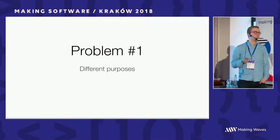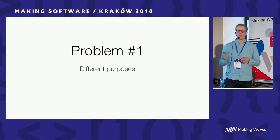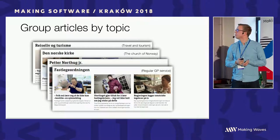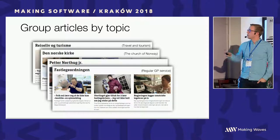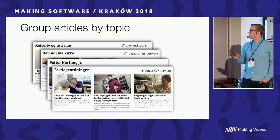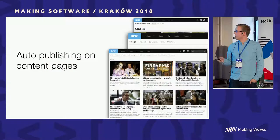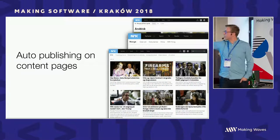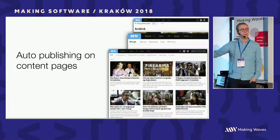Problem number one is that we have something called article collections. You can take your news articles and group them together in a collection. But those collections have been abused again and again by our journalists. The first use case I'd actually like to use them for is grouping articles by topic — things like travel and tourism, the Church of Norway, a famous skier called Petter Nortug. But we also use those collections to publish content on special pages. For example, this one is our page for foreign affairs news, and to get an article on the foreign affairs front page you need to put it in the foreign affairs article collection.